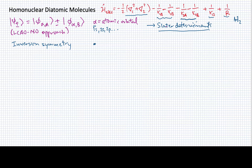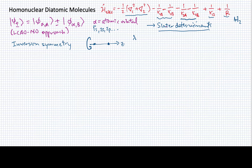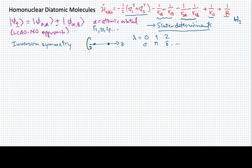Remember that diatomic molecules are generally situated with their nuclei on the z-axis, so there is a cylindrical symmetry to these molecules. We've seen already that in the H2 plus case, we have a quantum number lambda that basically tells us what kind of orbitals we create — whether sigma, pi, delta, or something higher. These are still going to be true even when we're talking about molecules with more than one electron involved in the bonding.